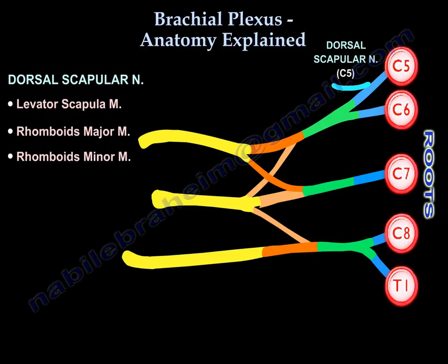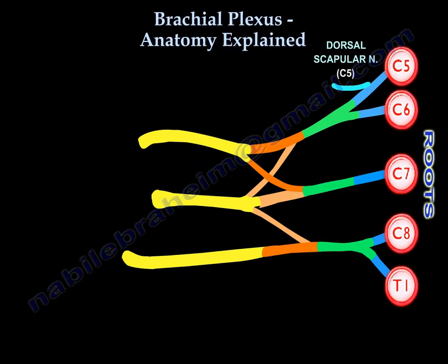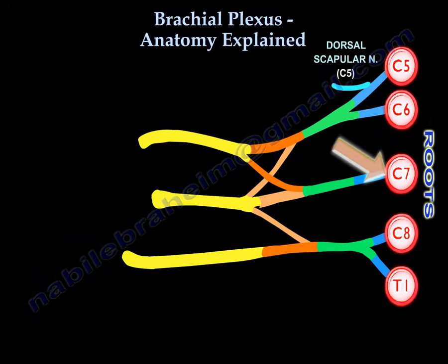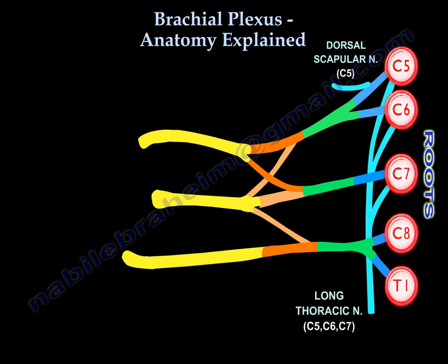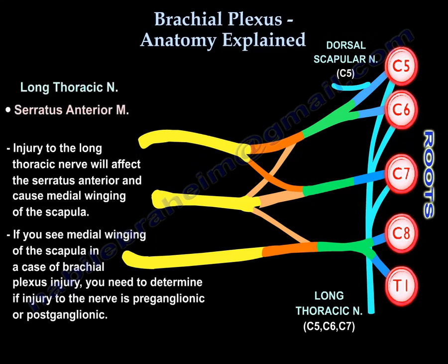From C5 comes the dorsal scapular nerve, which supplies the levator scapulae, rhomboid major, and rhomboid minor. From C5, C6, and C7 comes the long thoracic nerve, which supplies the serratus anterior.